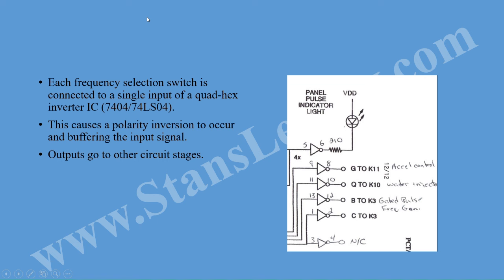Each frequency selection switch is connected to a single input of the hex inverter. In this case the hex inverter is a 7404, or more modern would be the 74LS04. This causes a polarity inversion of 180 degrees to the input frequency. It also provides some buffering, and the outputs go to the other circuit stages which will be expanded upon in other videos.